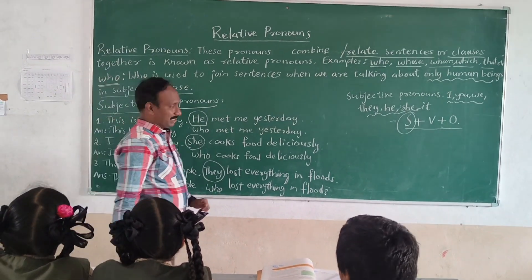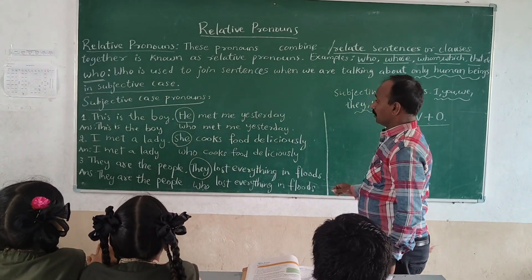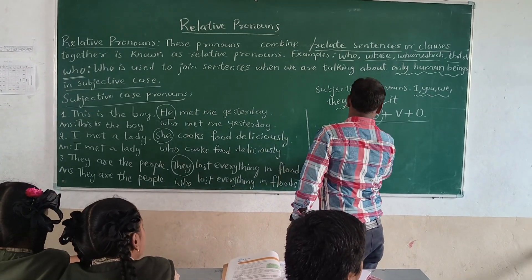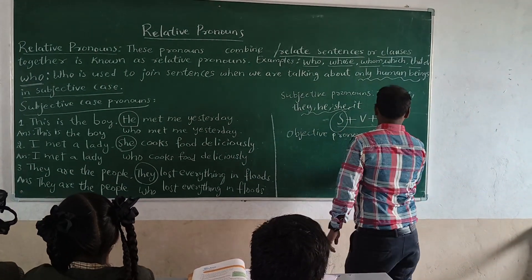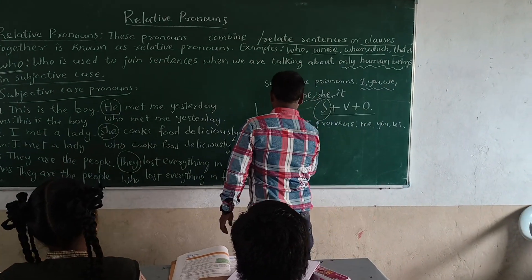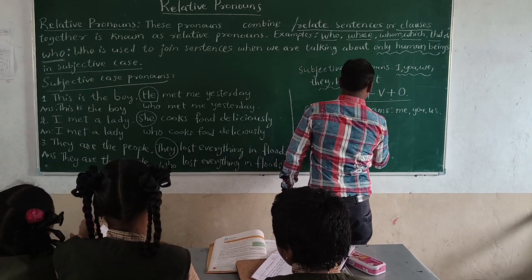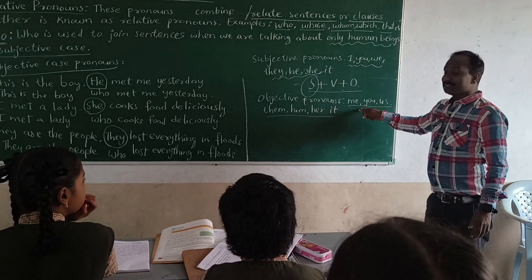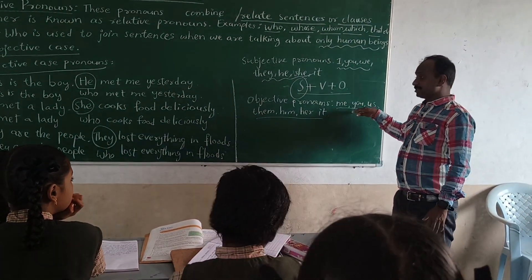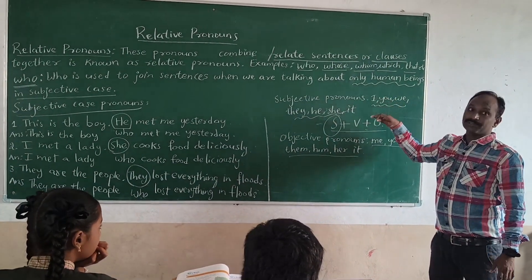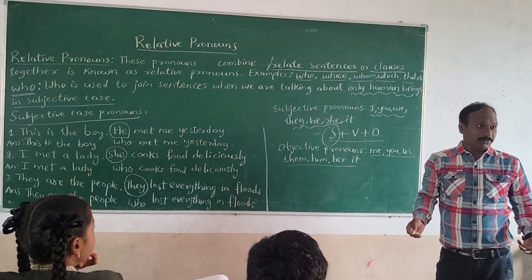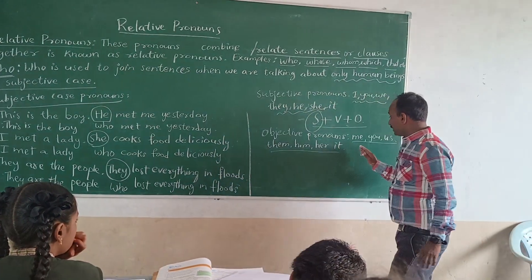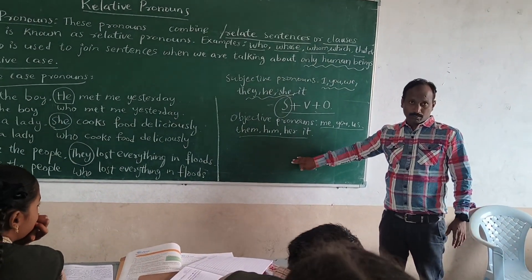Now, if there are objective pronouns in the sentence, and you want to replace them with a relative pronoun, we use 'whom'. So since we are replacing subjective case pronouns we use 'who', but if you are going to replace objective case pronouns, we use 'whom'.